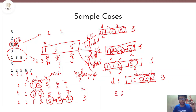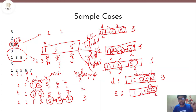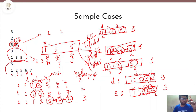If person D at position 6 gets infected first, they can infect the person at position 5 and the person at position 7, both at distance 1. They cannot propagate further left because the distance to position 2 is 3. So 3 people are infected. If person E at position 7 is infected, they can infect person at position 6 and person at position 5, but cannot infect person at position 2. So again 3 people are infected. In the best possible case only 2 people got infected and in the worst possible case 3 people got infected.